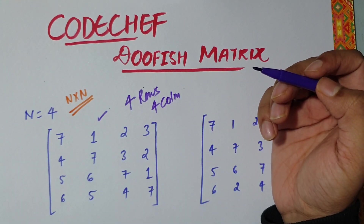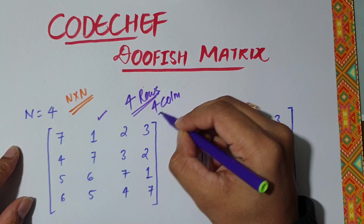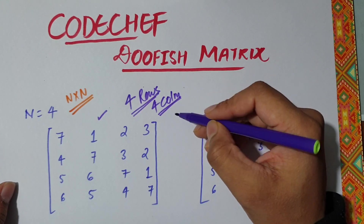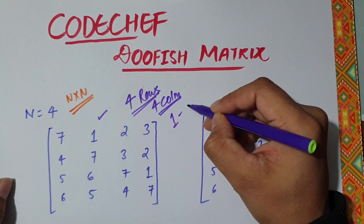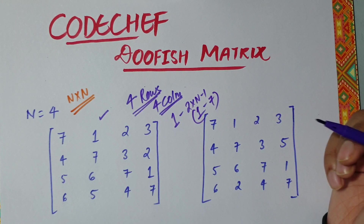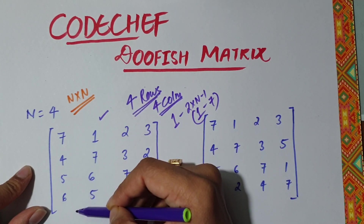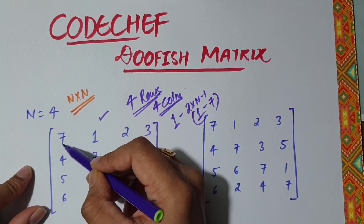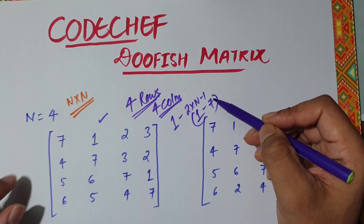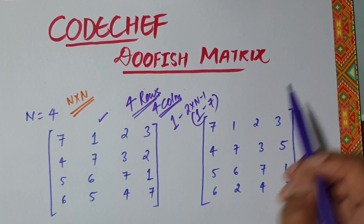For row one and column one combined — taking all elements in row one and column one — these elements should be from 1 to (2n − 1), that is from 1 to 7 for n=4. Row one has four elements and column one has four elements, with one common element, giving a total of 2n − 1 elements. These elements must cover 1 through 7.